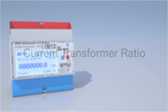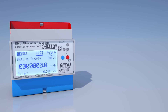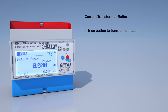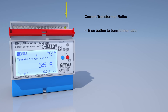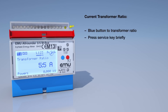Current transformer ratio. To configure the current transformer ratio, press the blue button several times until you see the transformer ratio menu. The configuration mode is accessed by briefly pressing the service button.